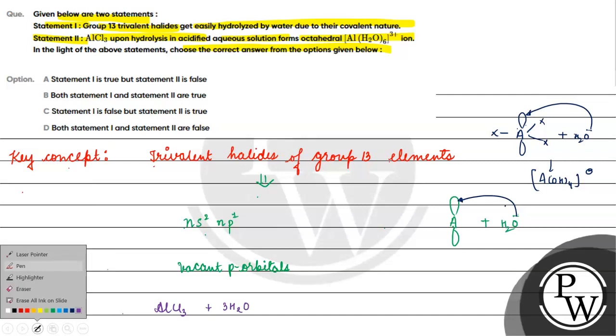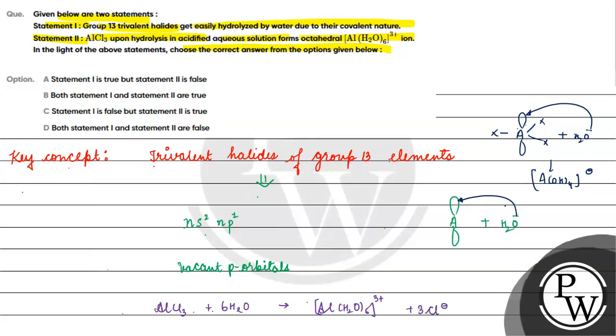So statement 1 and statement 2 are both correct. What happens in this case? It becomes a hexaaqua complex of aluminum, and this is octahedral. So statement 1 and statement 2 are both correct.